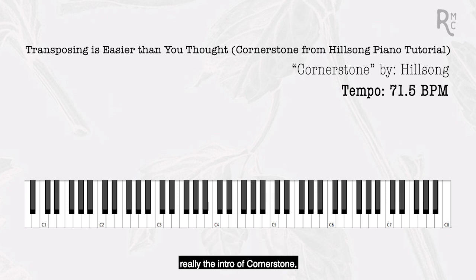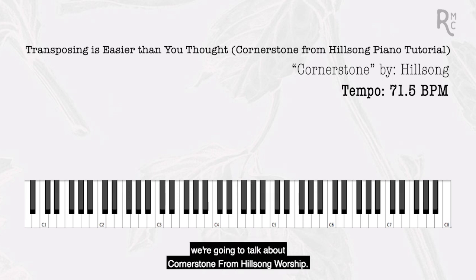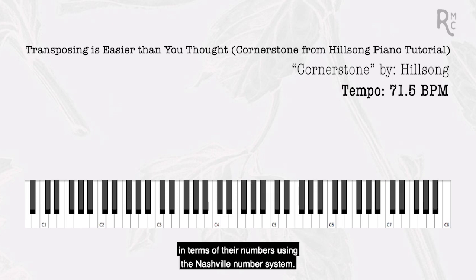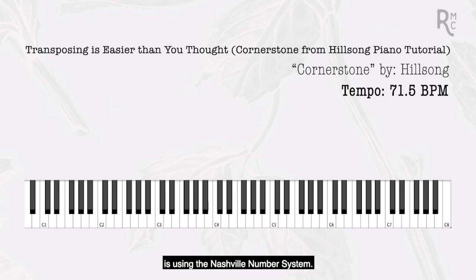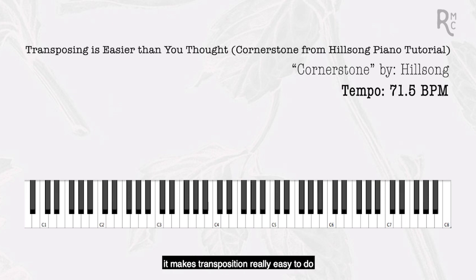Let's jump into the teaching. We're going to use the intro of Cornerstone as our example. Cornerstone from Hillsong Worship is in the key of C, and we're going to talk about the chords in the intro in terms of their numbers using the Nashville Number System. The best way to transpose is using the Nashville Number System — when you understand each key of music and the number system well, transposition becomes really easy.